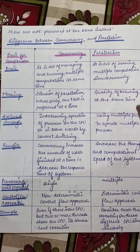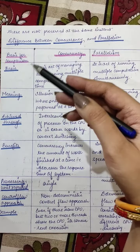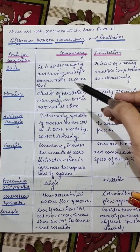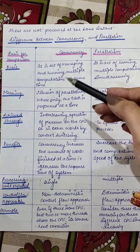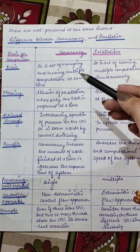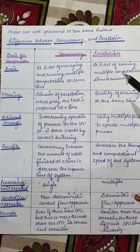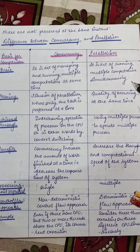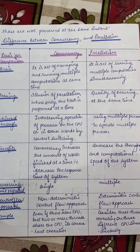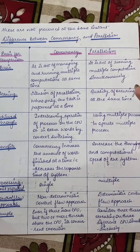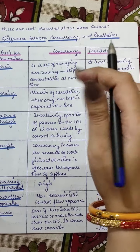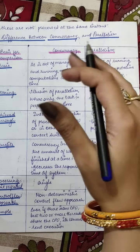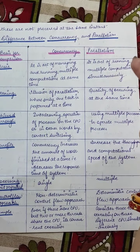Now let's look at the differences between concurrency and parallelism. The basic definition: concurrency is the act of managing and running multiple computations — you are just managing and running more than one task at the same time. In parallelism, all tasks are running multiple computations simultaneously. In concurrency, tasks are in different phases but managed together, while in parallelism they are run and executed together.